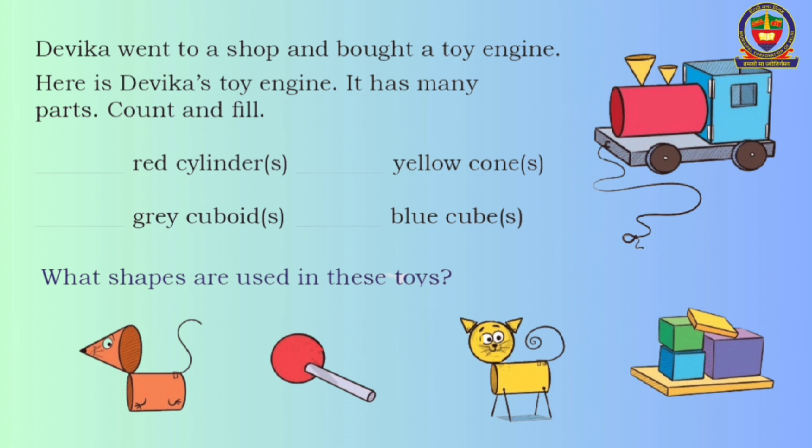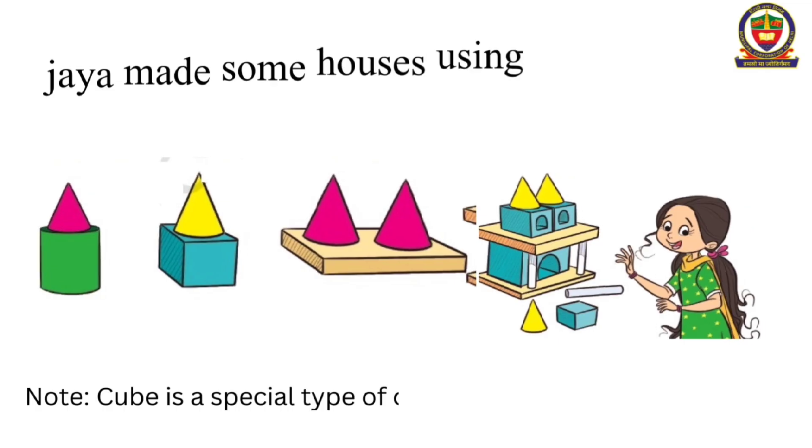Now, what shapes are used in these toys? Toy one: cone and cylinder. Toy two: sphere and cylinder. Toy three: cylinder, sphere and cone. Toy four: cube and cuboid.